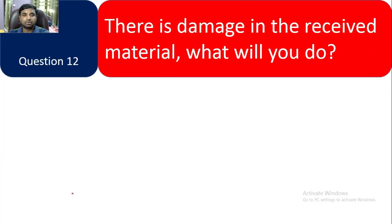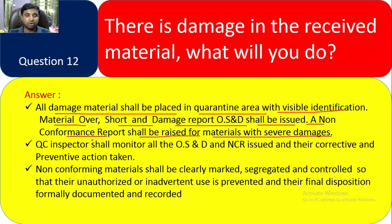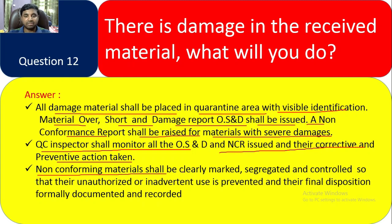Question 12: There is damage in the received material — what will you do as an inspector? All damaged material shall be placed in a quarantine area with visible identification. A material over-short damage report (OS&D) shall be used. A Non-Conformance Report shall be raised for material with severe damages. QC inspectors shall monitor all OS&D and NCR issues and their corrective and preventive actions taken. Non-conformance material shall be clearly marked, segregated, and controlled so no unauthorized person uses it, and final disposition shall be formally documented and recorded.